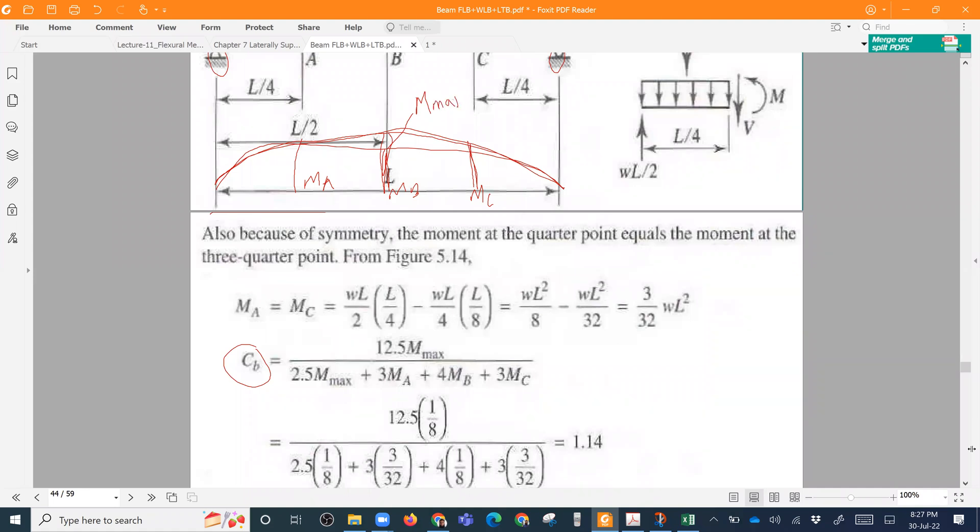For example, if we have a moment diagram like this. So this is my M max. This is M A, M B, M C. The total length is 0.25 L, 0.5 L and 0.75 L.